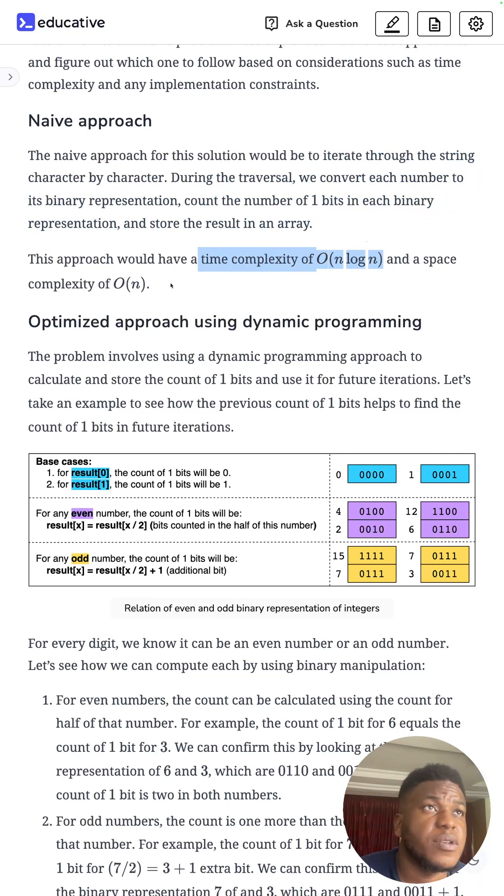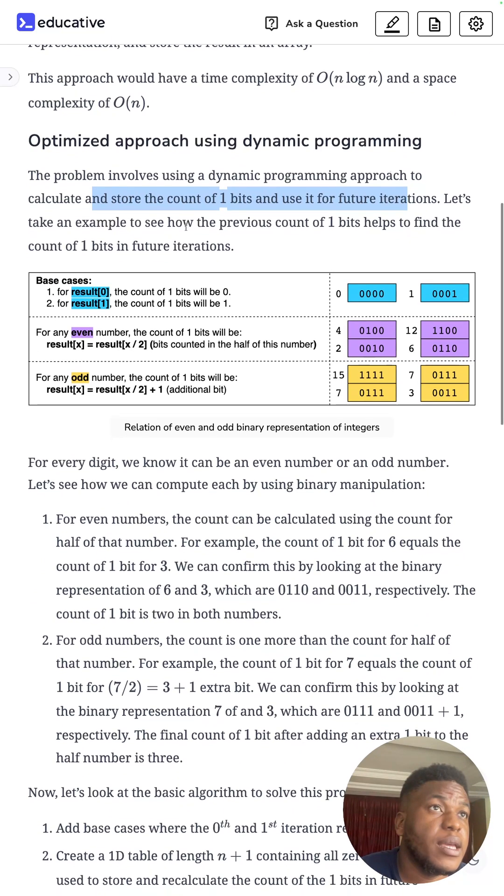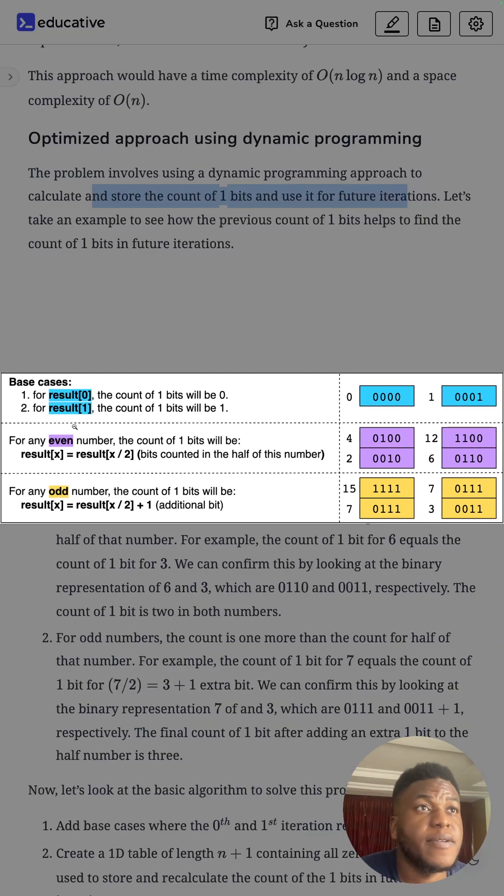For the optimized approach, use dynamic programming to calculate and store the number of one bits for future iterations. It requires you to realize this fact: the first one is going to be zero, the second one is always going to be one - so that's the base case for our recursion.